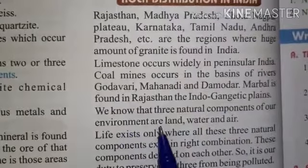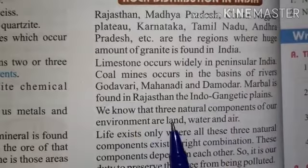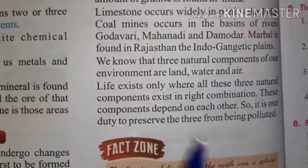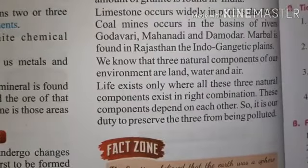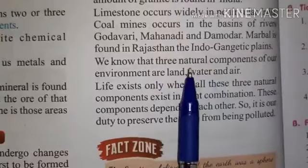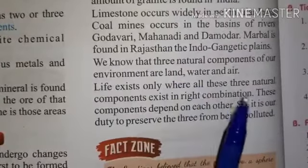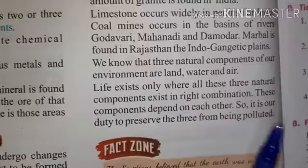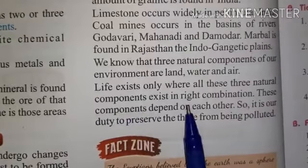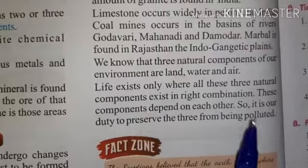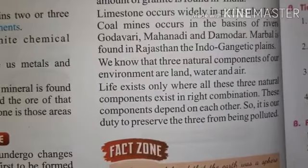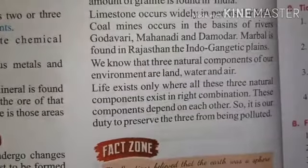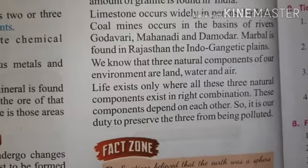The three natural components of our environment are land, water, and air. Life exists only where all three natural components exist in the right combination. If any one is too little or too much, life is not possible. These components depend on each other, so it is our duty to preserve all three from being polluted or degraded.